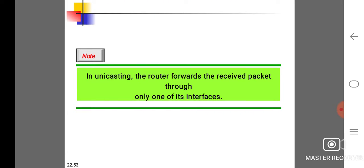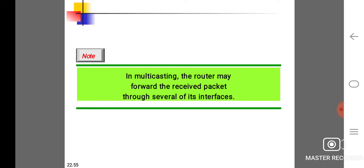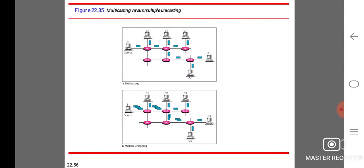Unicasting: the router forwards the received packet through only one of its interfaces. This diagram represents multicasting. In multicasting, the router may forward the received packet through several of its interfaces.